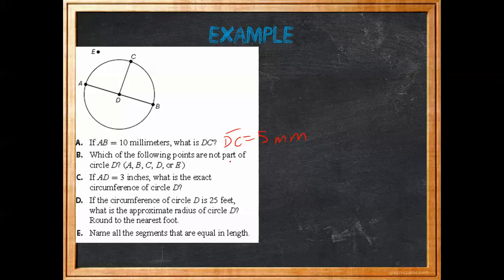Which of the following points are not part of circle D: A, B, C, D, or E? Obviously E is not a point on the circle — it's just a random point out here. And D is not part of the circle either because it's just the center. A, C, and B are the only points actually on the circle. Points that are part of a circle have to be on the circle.